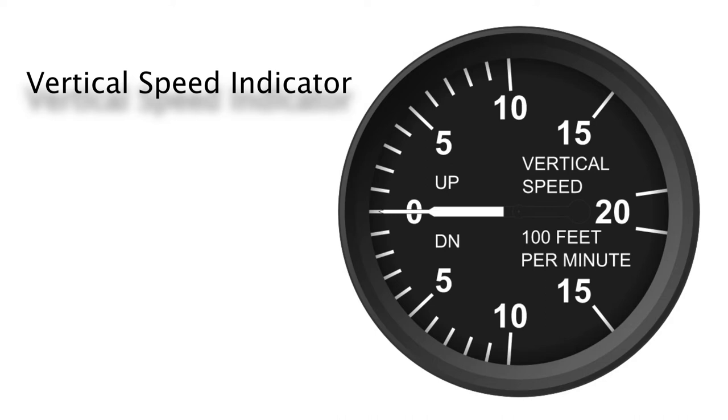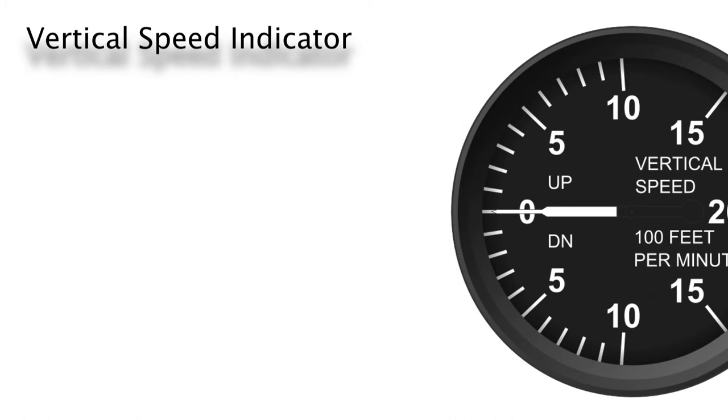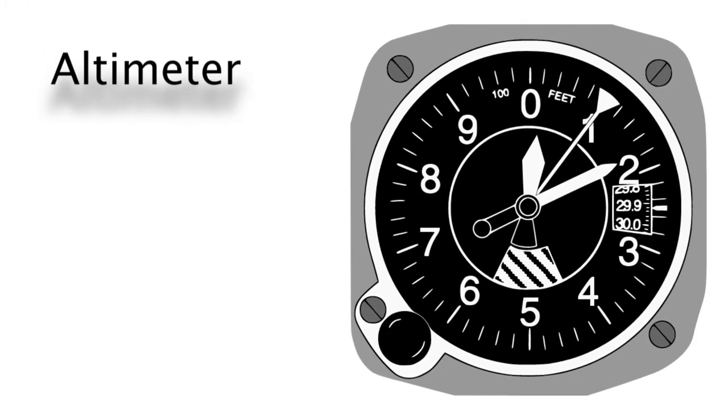The last instrument of the pitot static system is the altimeter, which measures the altitude you're flying at above sea level. As you see, it has three pointers. The longest one with a triangular on its tip shows feet in ten thousands. The shortest one in thousands and the last one in hundreds. For instance, this one here is showing ten thousand one hundred eighty feet.